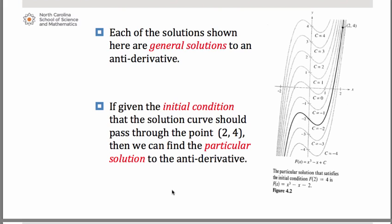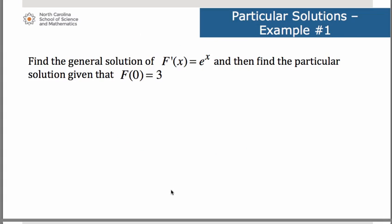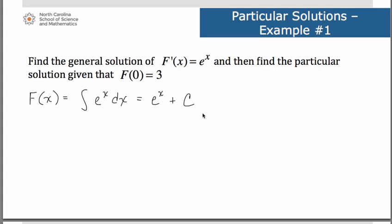We're going to take a look at examples of how you do this. In this first one, we are asked to find the general solution of f'(x) = eˣ, and then find the particular solution given that F(0) = 3. Notice we are first asked to find a general solution — that implies we want an answer that has plus c in it. In order to find the original function, we need to take the antiderivative of eˣ dx. The antiderivative of eˣ is simply eˣ — notice the notation I am using to set this up.